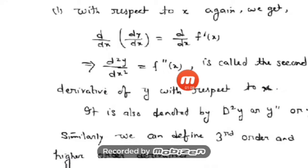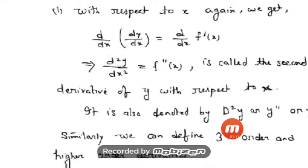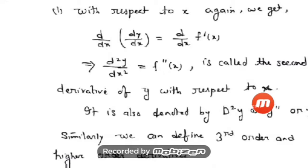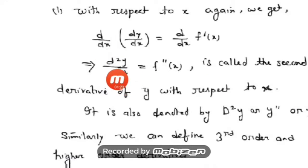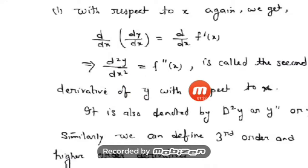Instead of using this symbol, you can use other symbols also: D²y, y'', or y₂, etc. Remember one thing: you have to read it as 'd two y d x two', not as 'd square y d x square'. After doing the second order derivative, if it is again differentiable, we can find out higher order derivatives — third order, fourth order, and so on.